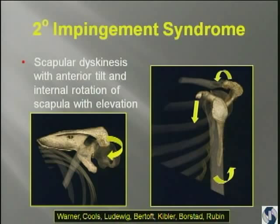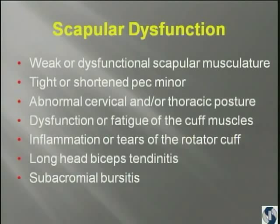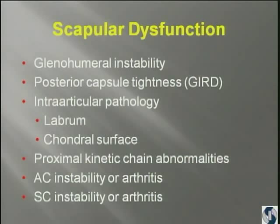So what will contribute to scapular dysfunction? Pretty much anything in the kinetic chain: weak or dysfunctional scapular musculature, pec minor, postural problems, rotator cuff issues, biceps tendonitis, subacromial bursitis, glenohumeral instability, GERD, labral pathology, chondral surface problems, proximal kinetic chain abnormalities, AC and SC instability. Pretty much anything along the kinetic chain can contribute to scapulothoracic dysfunction, which will cause impingement.